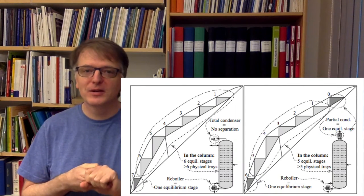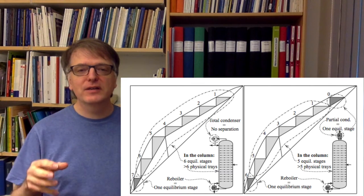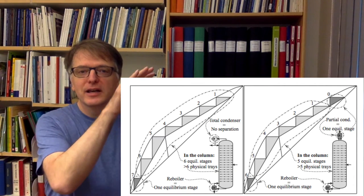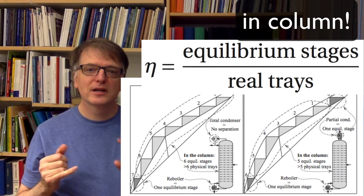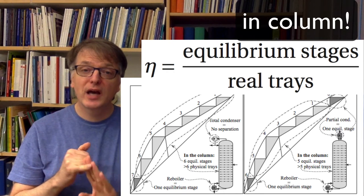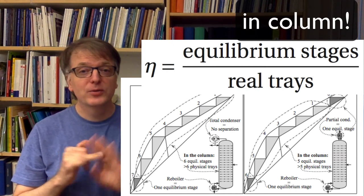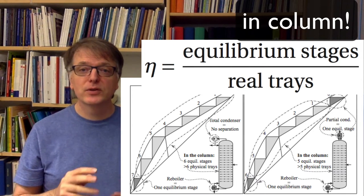And you need to take into account if you have partial condenser or if you have a reboiler and take away those because the tray efficiency is calculated in the column not outside. And we will assume always that the partial condenser is 100% perfect so there we have an equilibrium and that the reboiler there we also have perfect conditions so we have an equilibrium. So those are both equilibrium stages outside of the column.